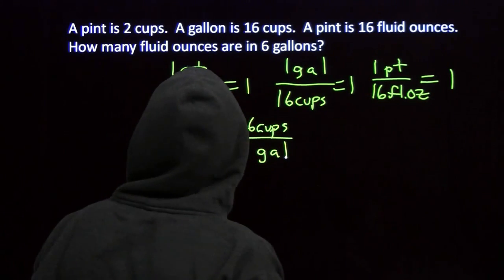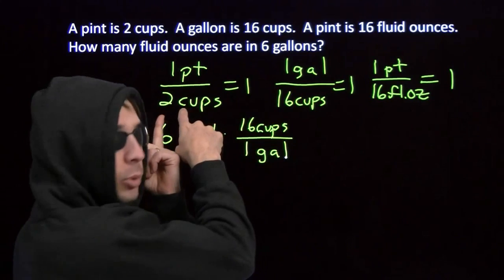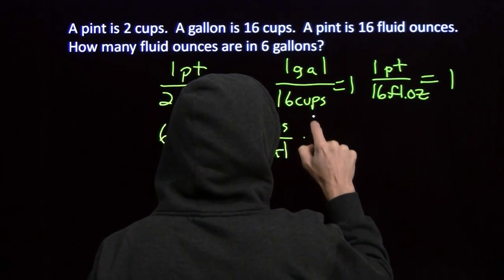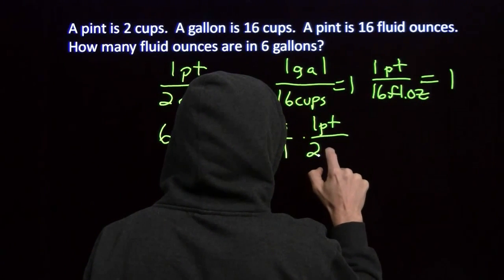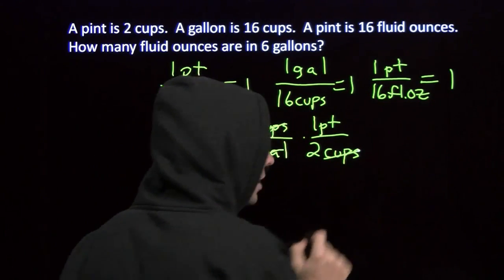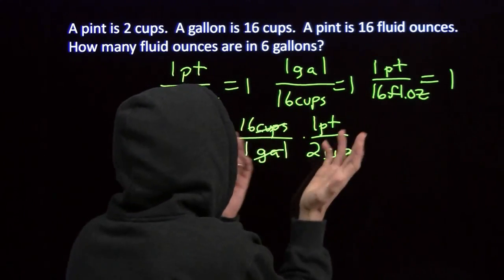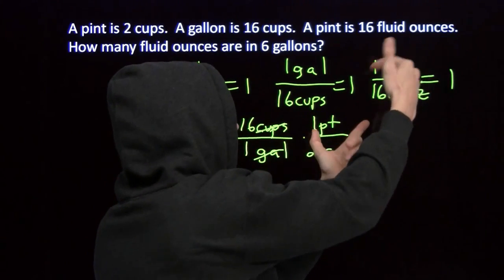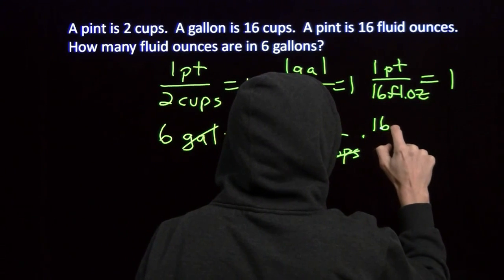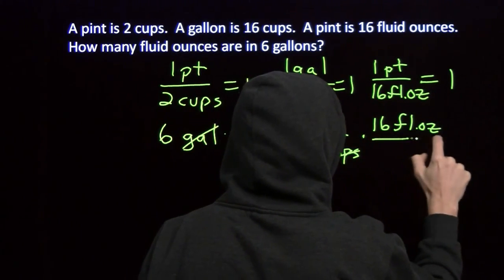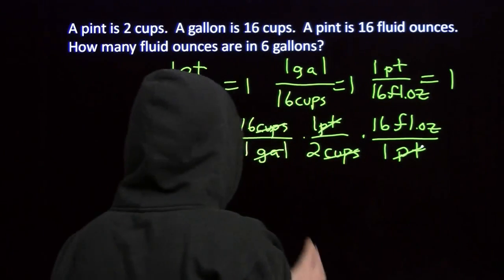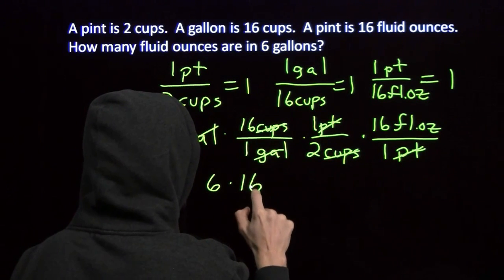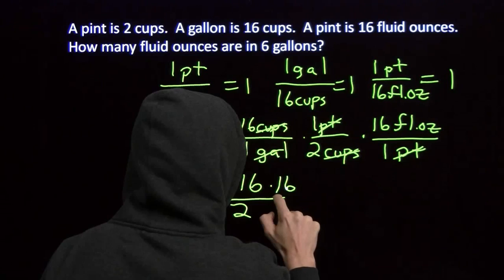That leaves me with cups, but I don't want cups — I want fluid ounces. This conversion factor has cups, so I can cancel them out. I multiply by 1 pint over 2 cups to cancel the cups. Now I've got an answer in pints, but I want fluid ounces. I use my last conversion factor and multiply by 16 fluid ounces over 1 pint to cancel the pints. All units cancel out except for fluid ounces, leaving 6 times 16 divided by 2 times 16 fluid ounces.